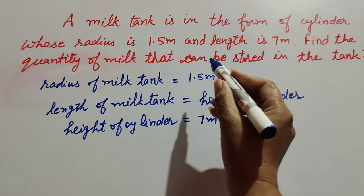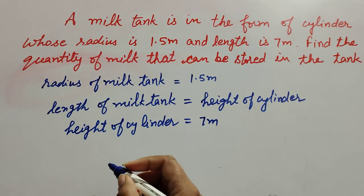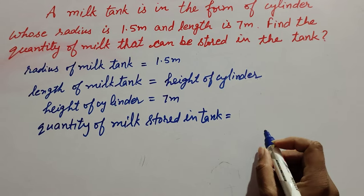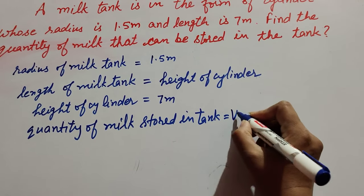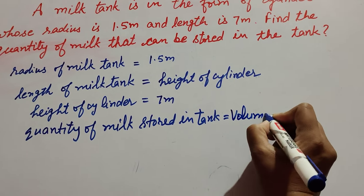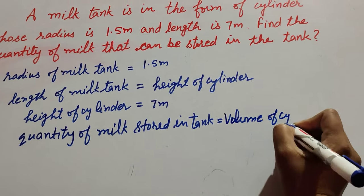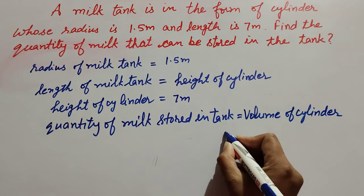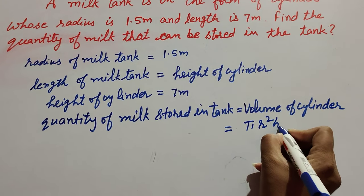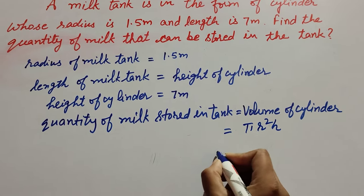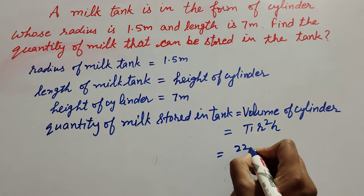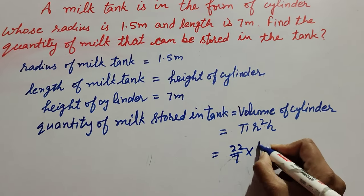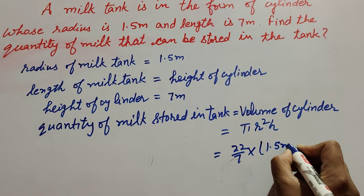The quantity of milk that can be stored in the tank is equal to the volume of the cylinder. We know the formula to find volume of cylinder: it is equal to π r² h. Here π is the constant 22 over 7, r is the radius equal to 1.5 meter, and h is the height.